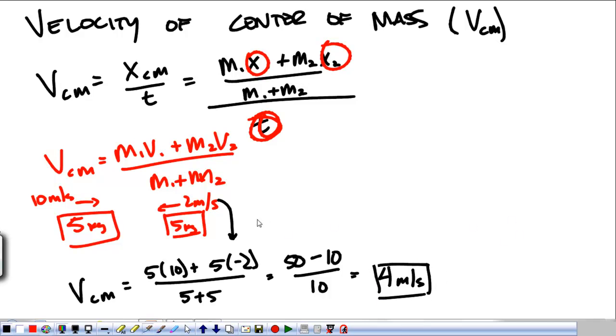So what we can do is now take this and say instead of two masses, let's just take one big mass of 10 kilograms and say that it's moving at 4 meters per second. We're going to continue this idea on the next.